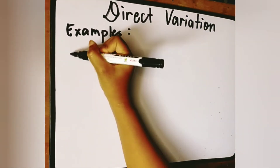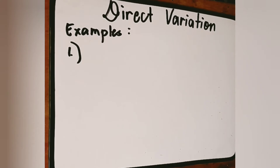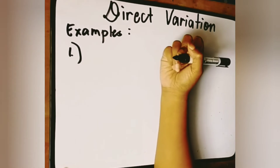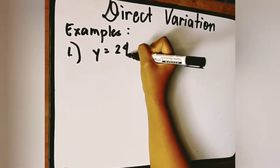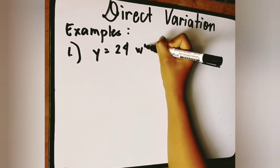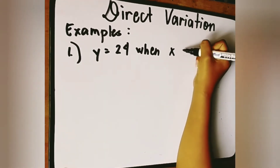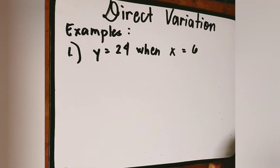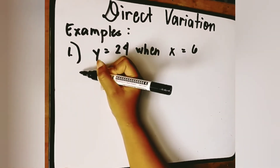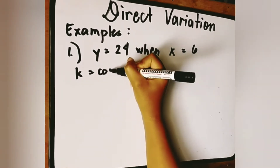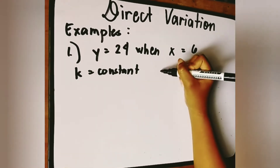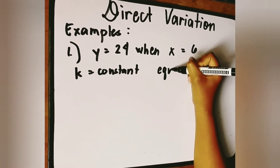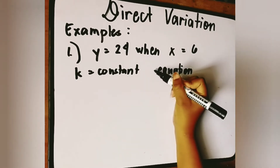So let's have the examples. Example number one: if y varies directly as x and y is equal to 24 when x is equal to 6, find the constant of variation and the equation of the variation.